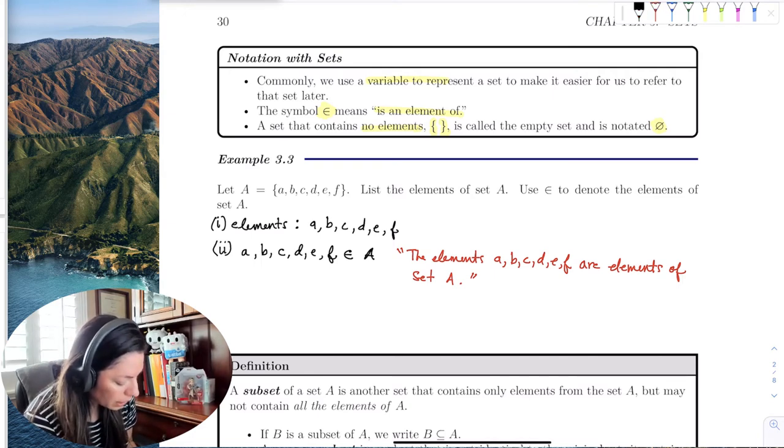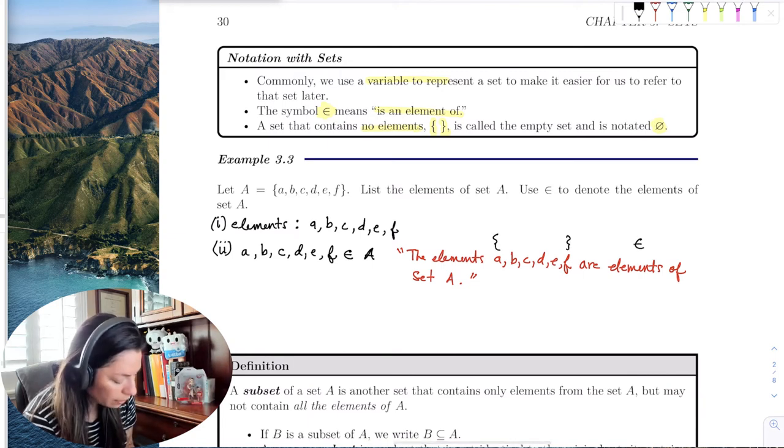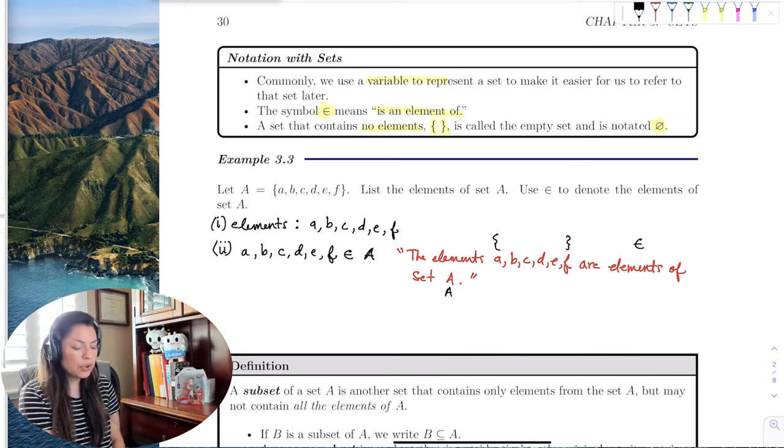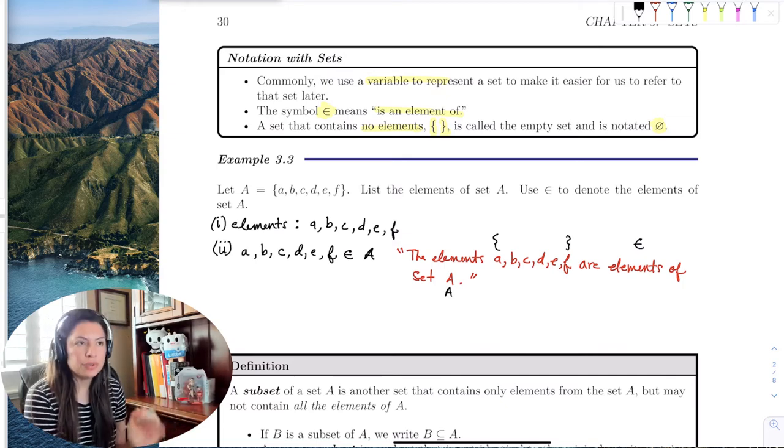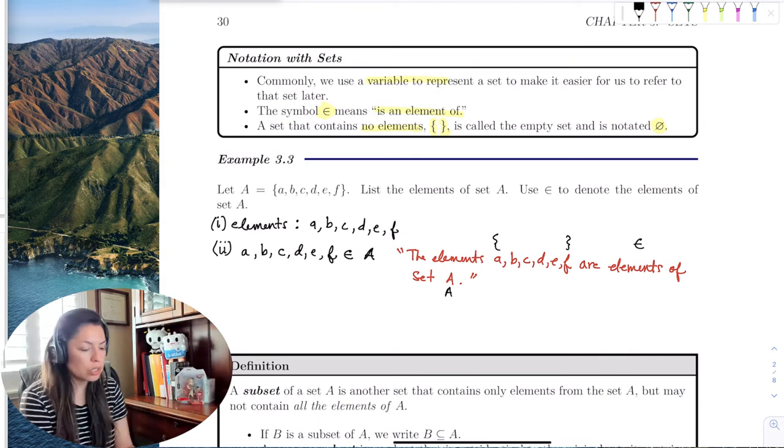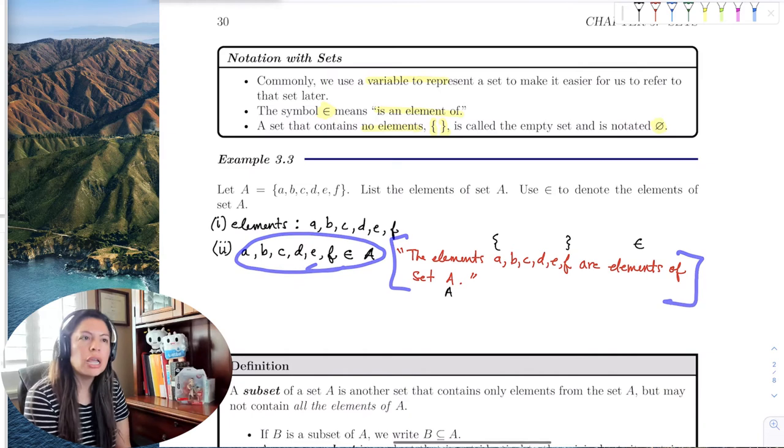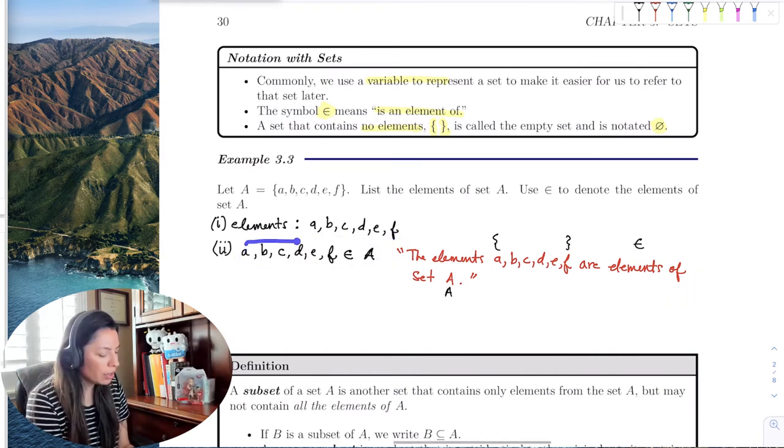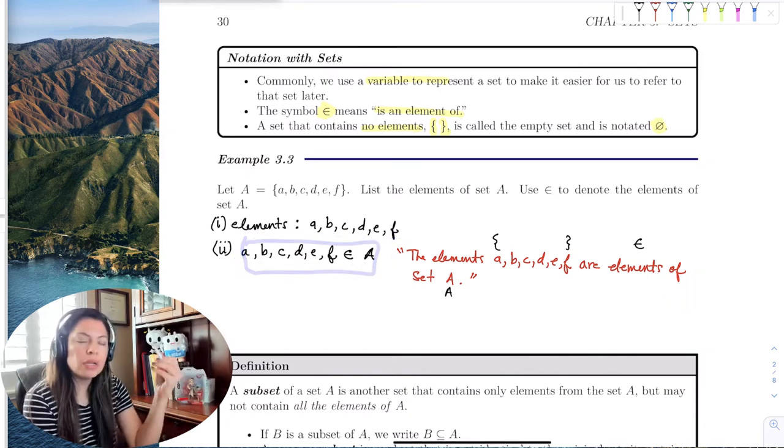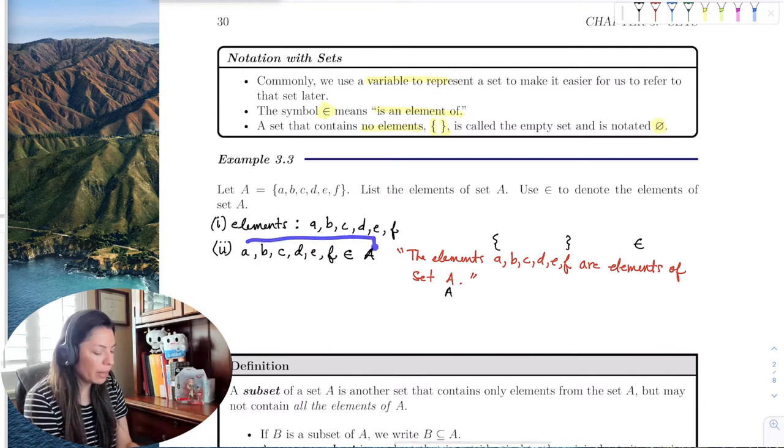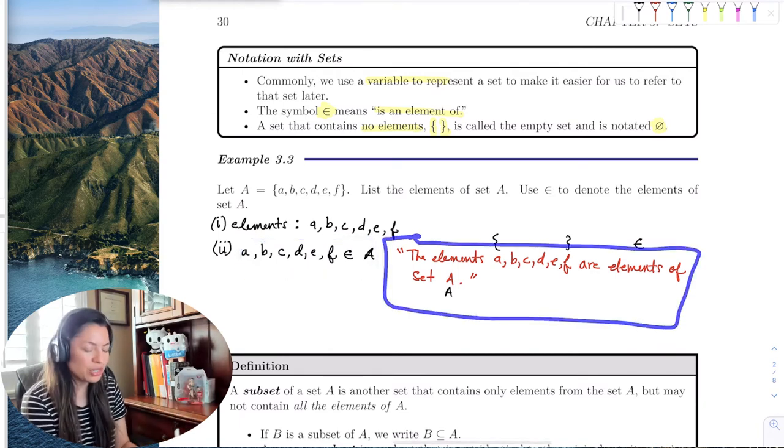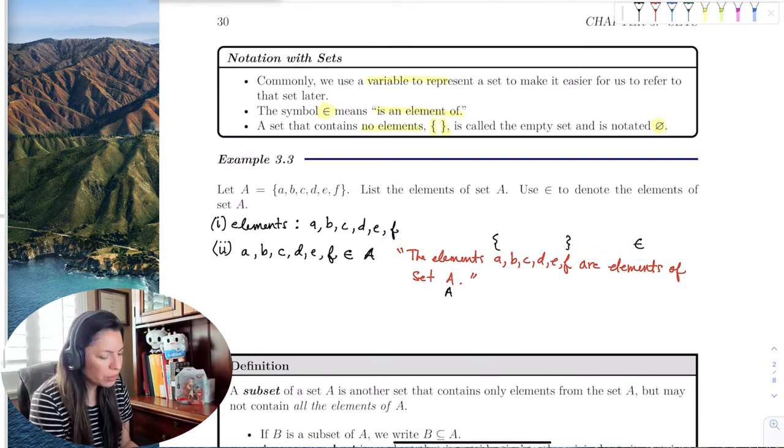And so, you know, this is like the set are elements of and then the set A. So notice that we have like the symbols, how much shorter and quicker it is to write it with symbols rather than maybe the English language. But as you read the symbolism, it should, even though it looks symbols on paper, you should read it as the English language. And that takes a little practice.